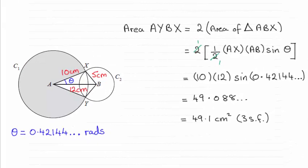Hi there. So for this question, we had to work out the area of the kite AYBX. And it turned out to be 49.1 cm squared, to three significant figures.